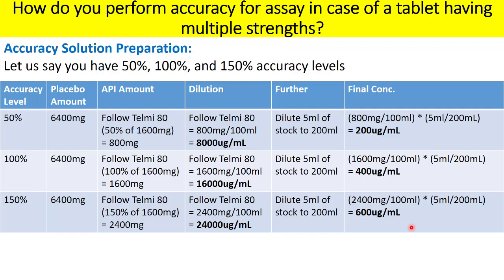Correlating the final concentrations with the test concentration: 50% accuracy solution is exactly 50% of the final test concentration, the 100% accuracy level solution is exactly equal to the test concentration of all strengths, and the 150% accuracy concentration is exactly 150% of the test concentration. More importantly, the API preparation was conducted in line with the worst-case scenario — the 80 mg strength — to ensure the single accuracy study is valid for all multiple strengths.